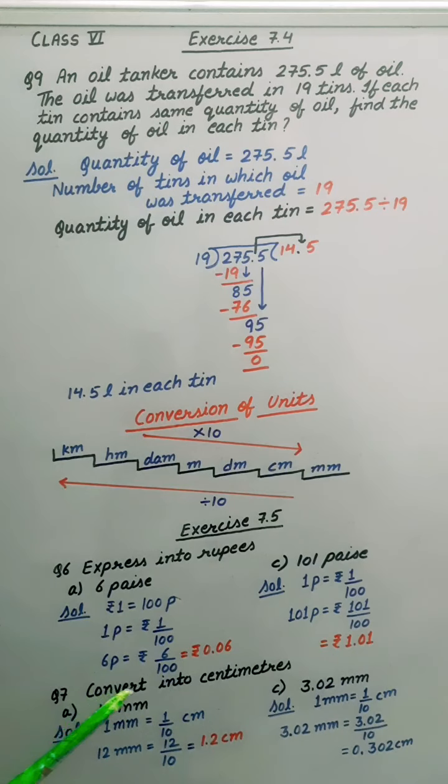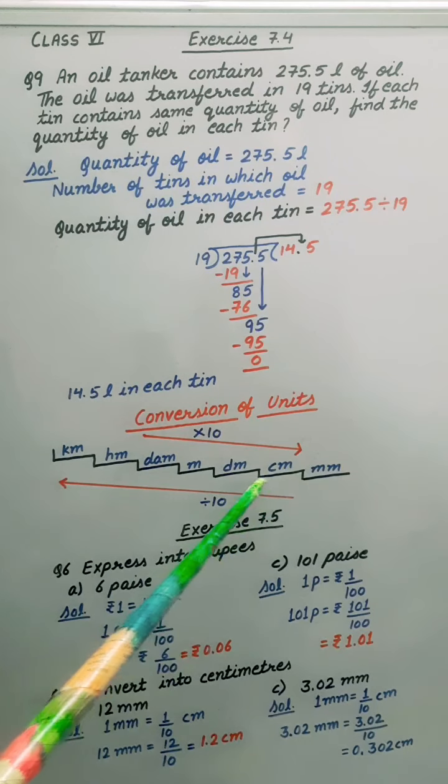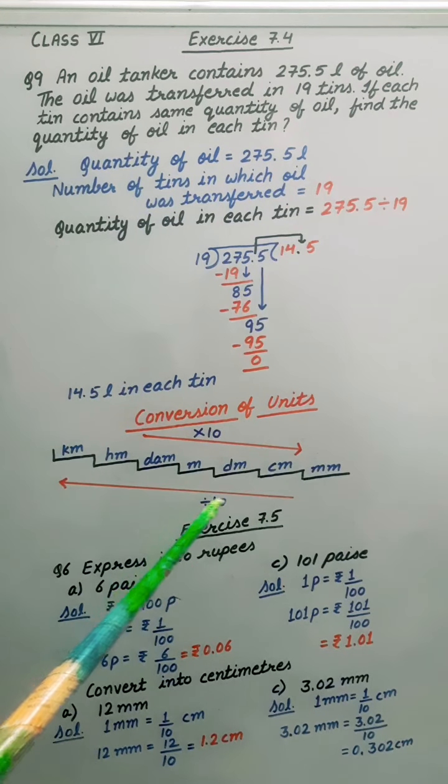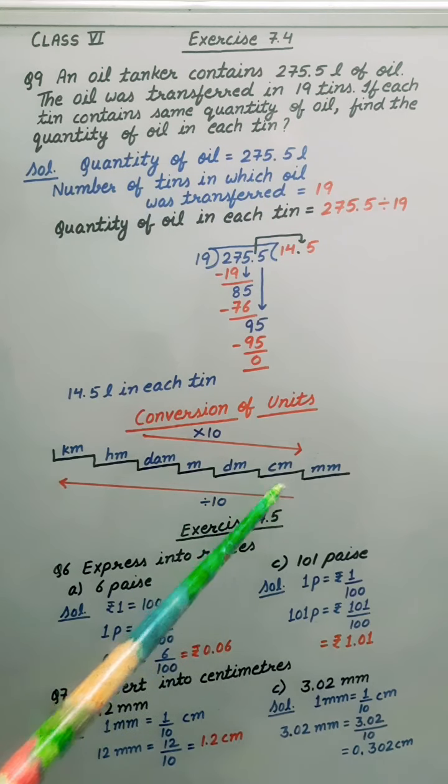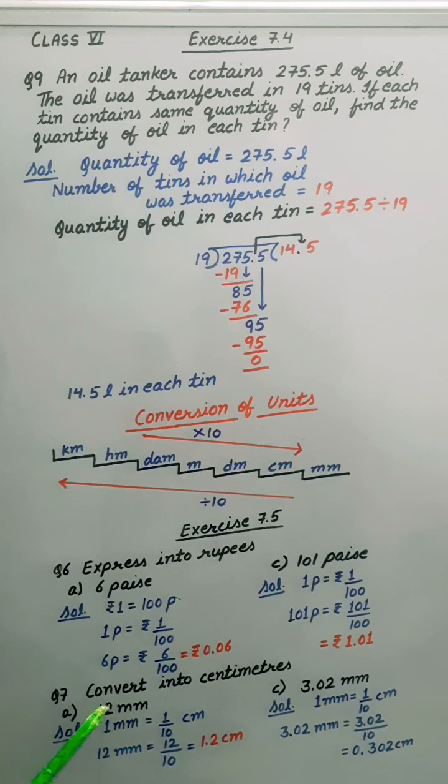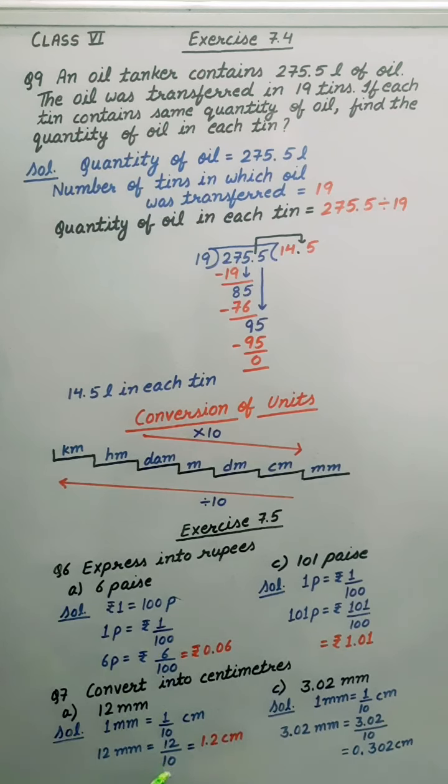Question number 7. Convert into centimeters. It is given 12 millimeter. When we convert small unit into big one, we have to do division. So millimeter into centimeter, we will divide by 10. So 12 divided by 10. Because there is one zero, we count one digit from back and put decimal. Answer is 1.2 centimeter.